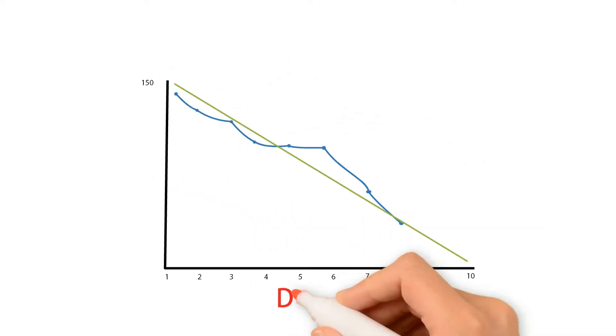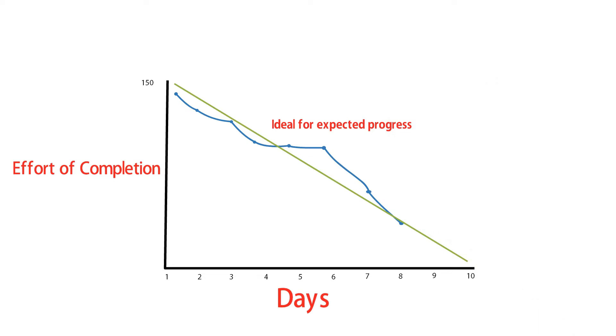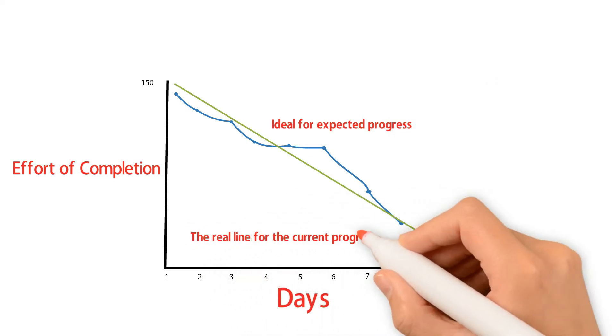The X axis is for days of expected work in the iteration. The Y axis is for effort of completion. The ideal line shows expected progress. The real line shows the current progress.